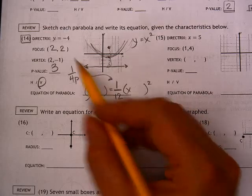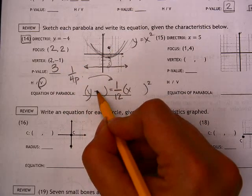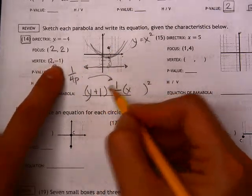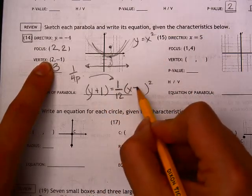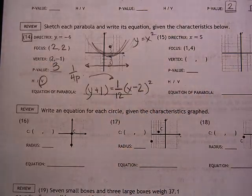And then my vertex is negative, no, positive 1, right? Opposite of what's with y, opposite of what is with x. And that's it.